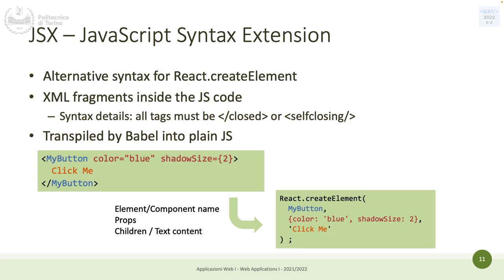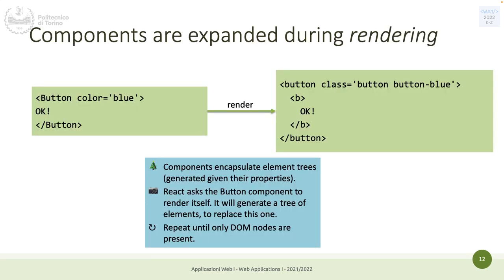JSX stands for JavaScript Syntax Extension. All tags must be either closed or self-closing. All three things — type, props, and children — are present: `MyButton` is the type, `color="blue"` and `shadowSize={2}` are the props, and "click me" is the child. Components are then expanded during rendering into actual HTML — a Button component with `color="blue"` expands into an HTML button element with the appropriate class and bold text.